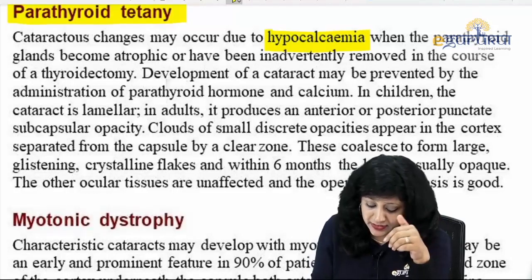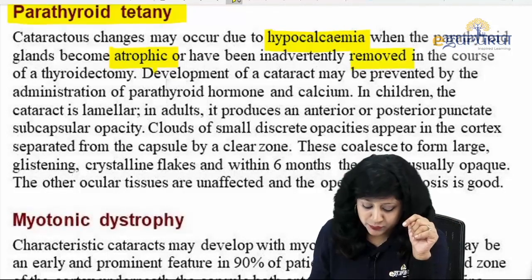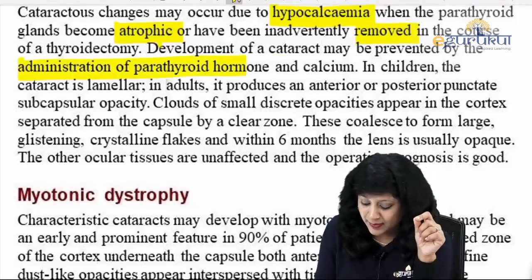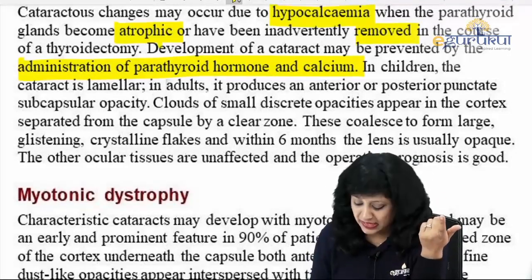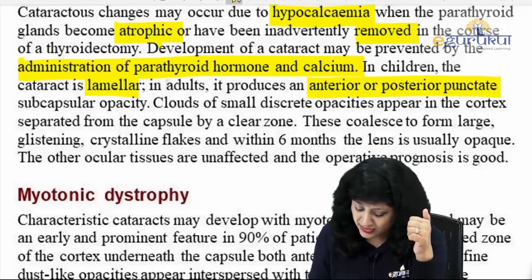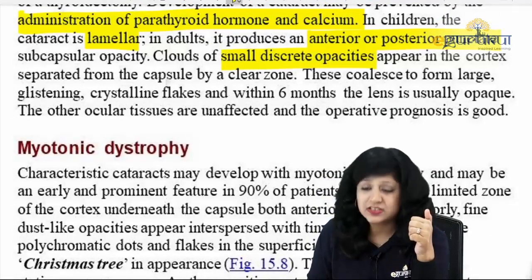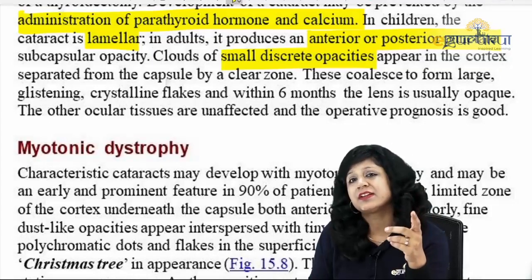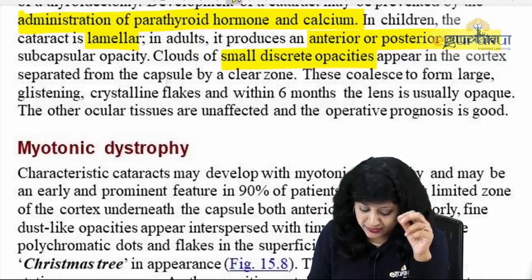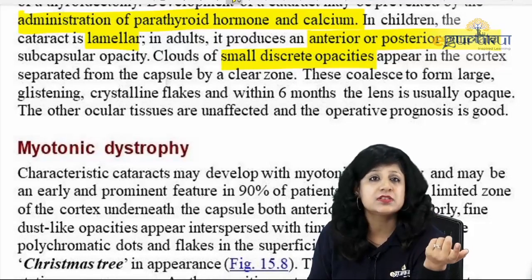Development of a cataract due to parathyroid tetany may be prevented if you give parathyroid hormone or directly replace calcium. In children this cataract is lamellar; in adults you can get punctate opacities. We can also have clouds of small discrete opacities in the cortex which coalesce to form large ones. The lens is usually opaque. The other ocular tissues are unaffected. Prognosis is good.